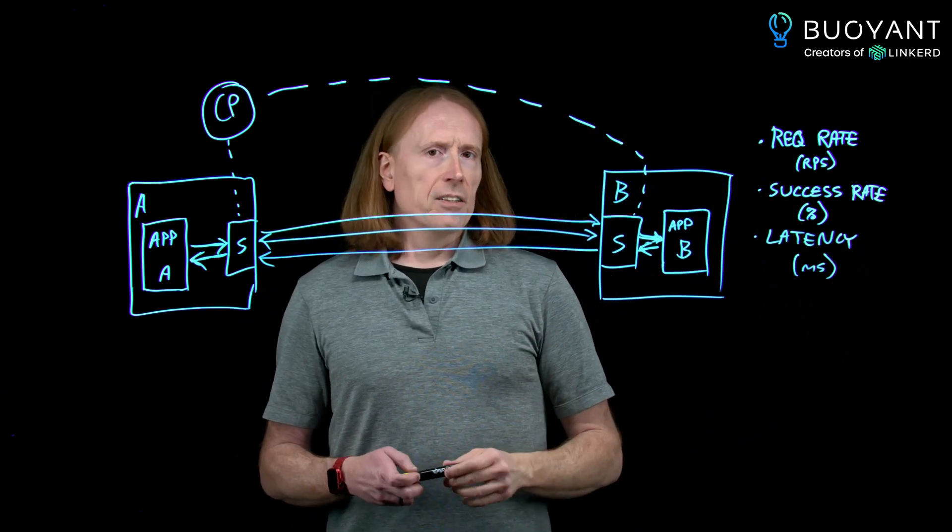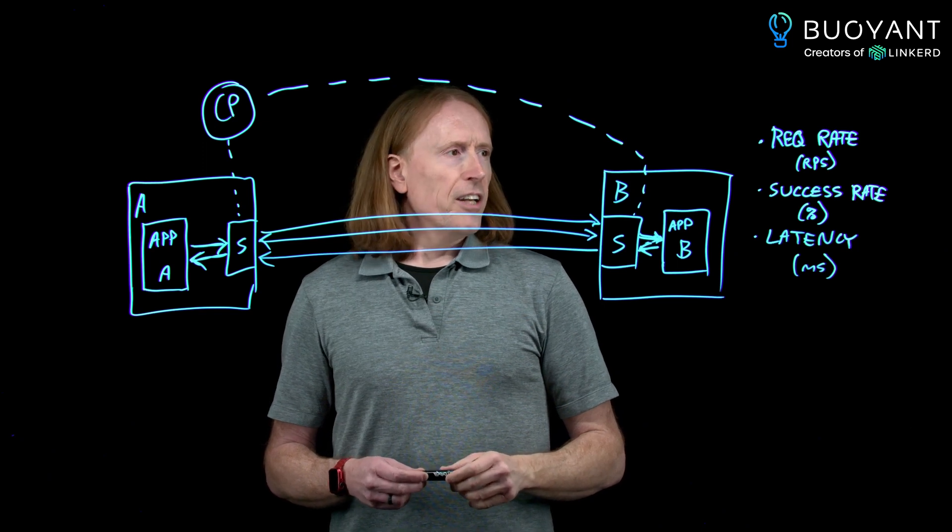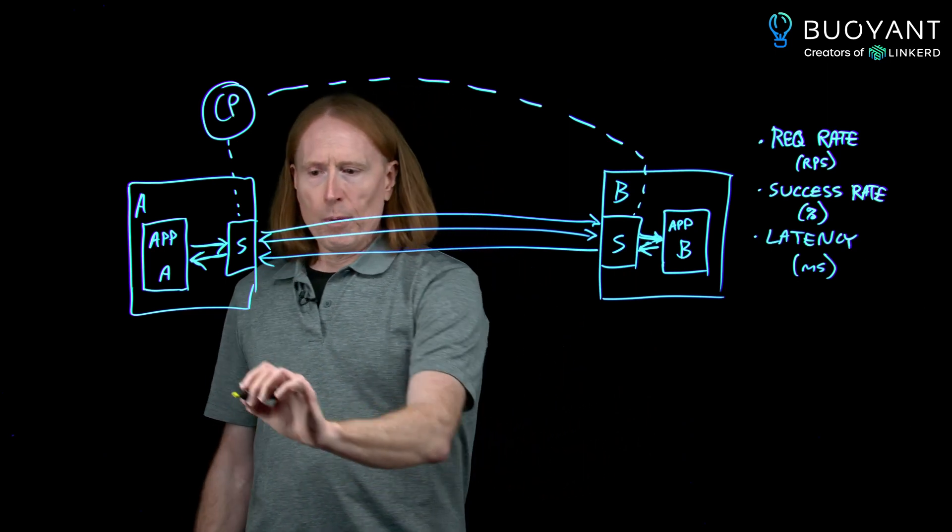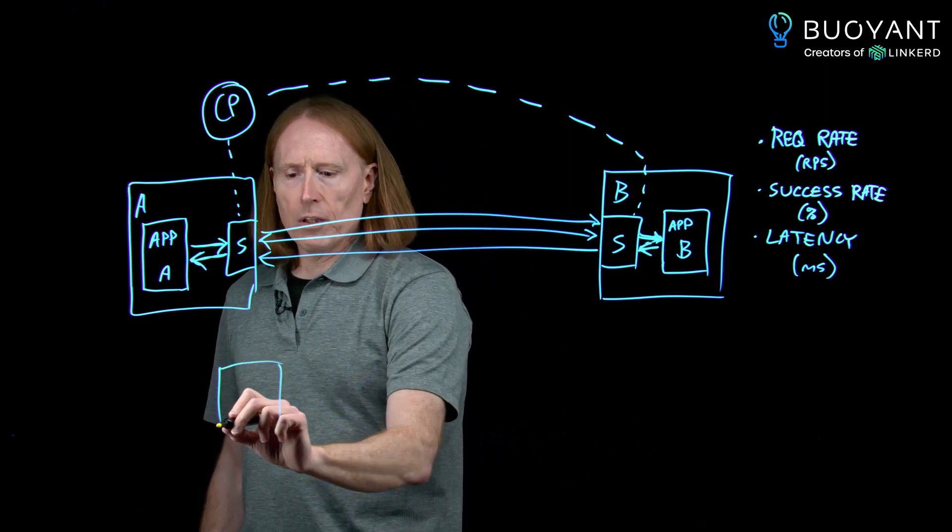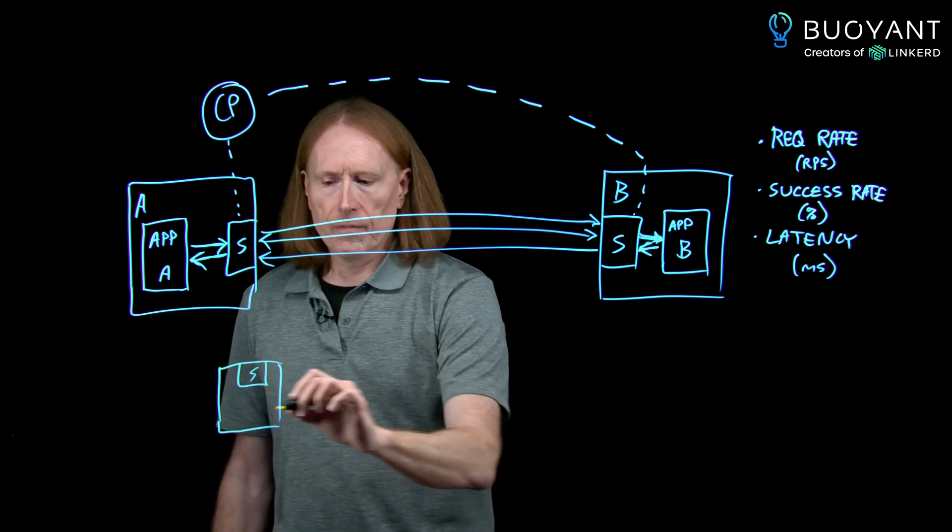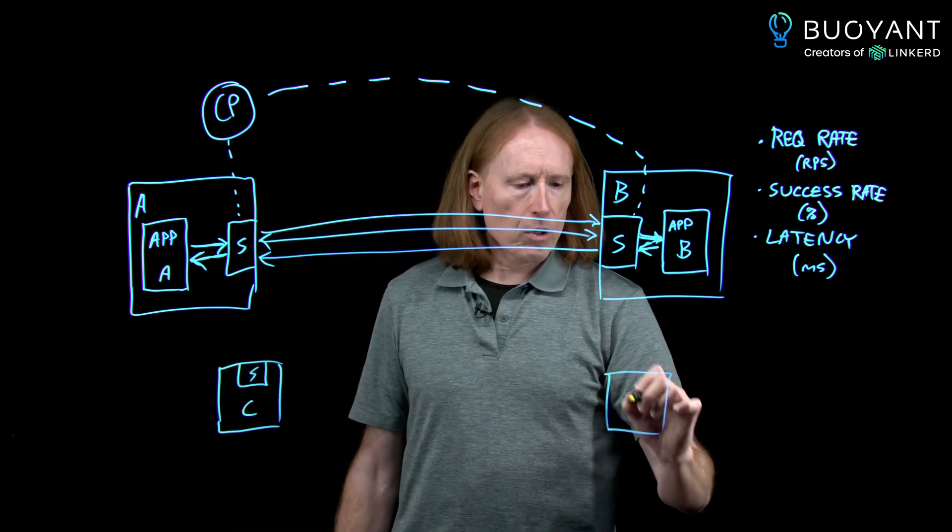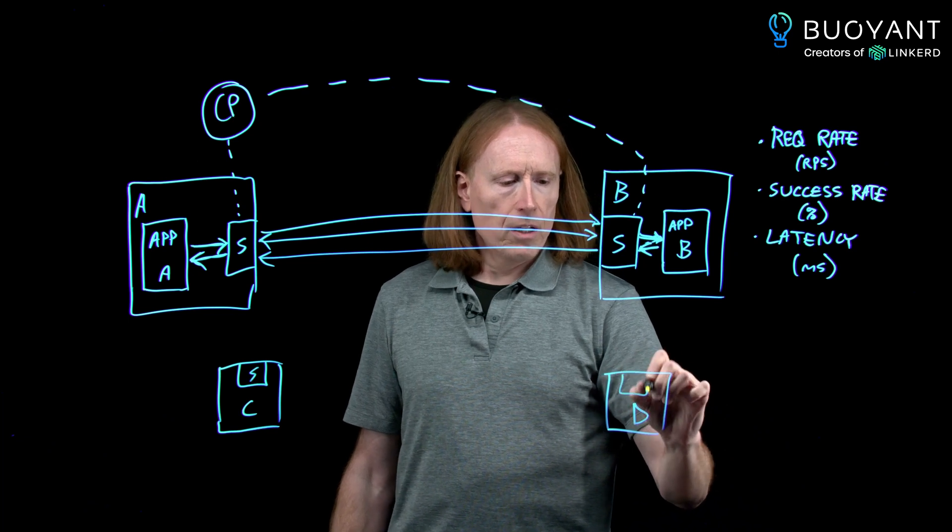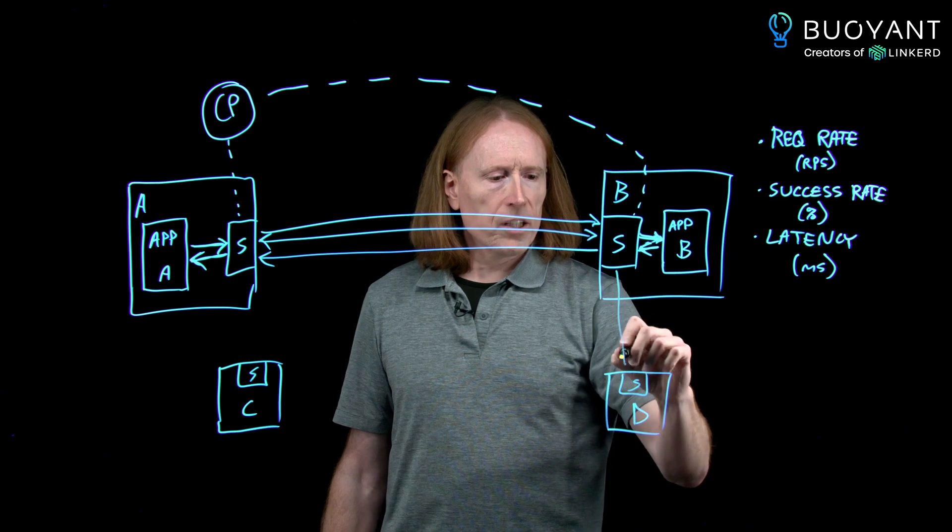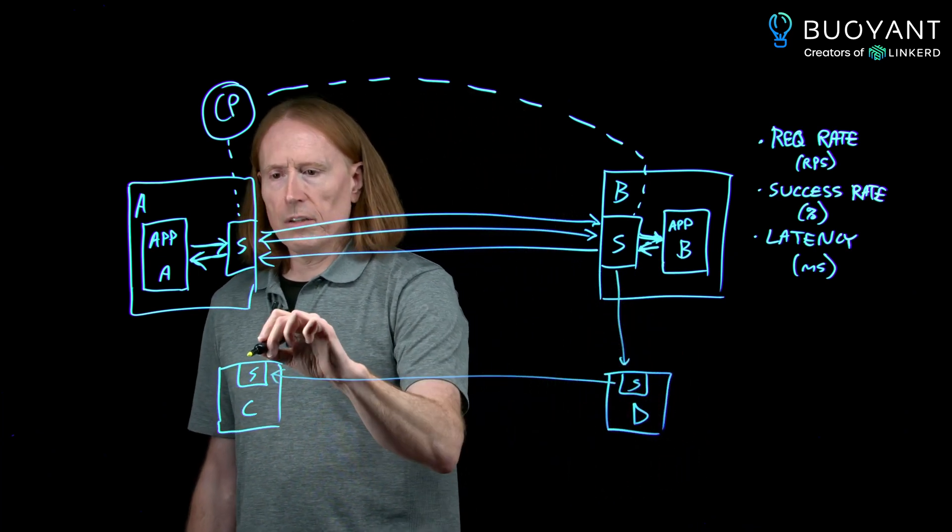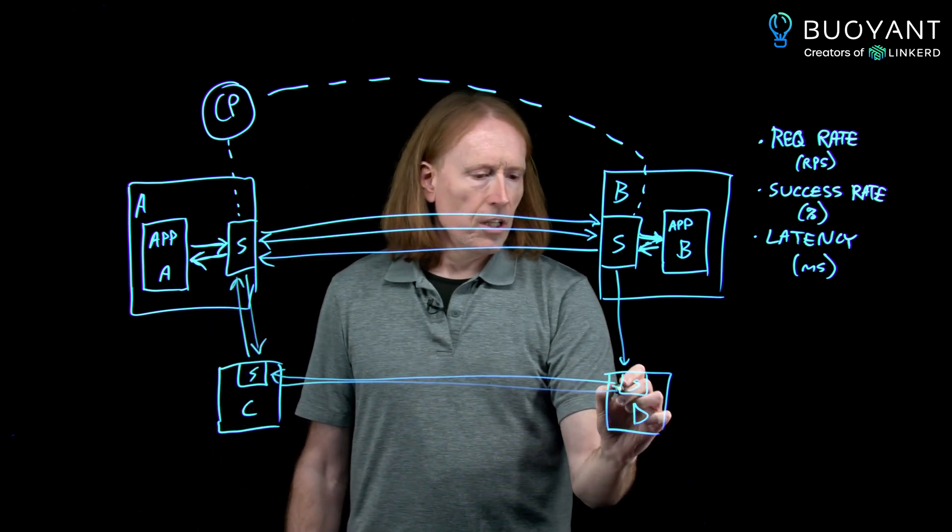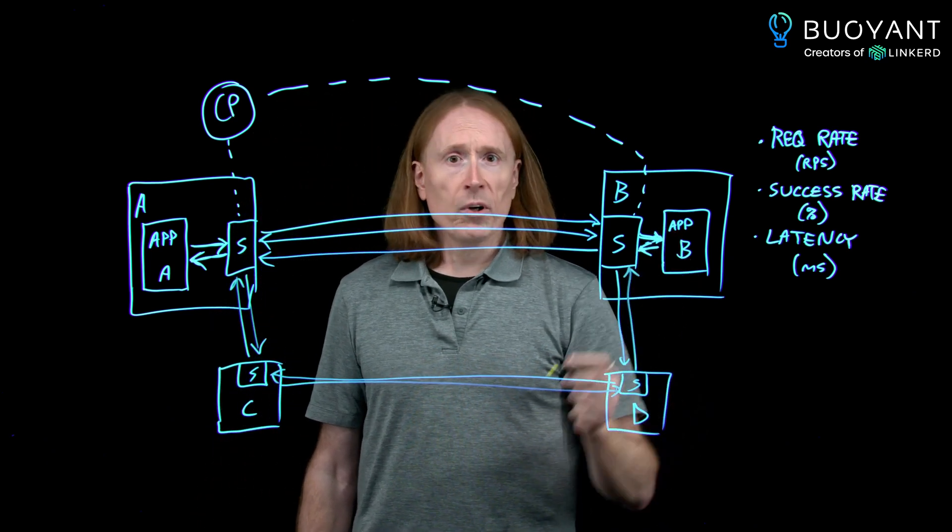All of these things end up being pretty critical for actually getting a good sense of what's going on. So remember, there are probably other workloads in here. You can see we've got workload D down here. And again, since the sidecars are always involved, we can do all of these calculations anywhere in the mesh at any point in the call graph.